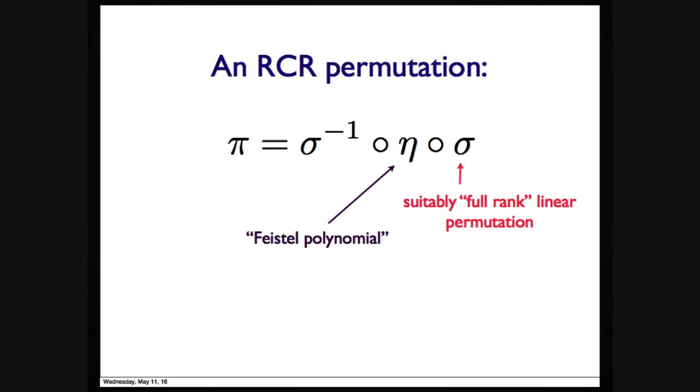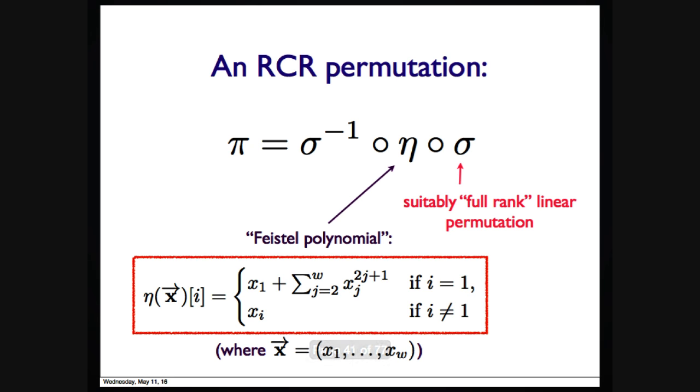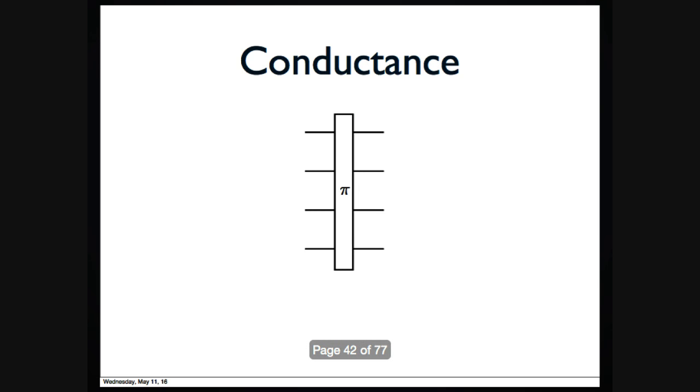Though linear permutation doesn't work, we construct an explicit construction that is RCR. It's a linear permutation σ composed with a Feistel polynomial composed with the inverse of σ. The Feistel polynomial is that there are W wires. You leave all but one wire alone, and for the last wire, you add something that is determined by the rest of the wires. It's easy to see it's invertible. And we prove this construction is RCR. The detail is not presented here.